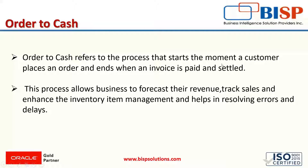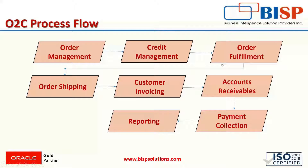There are various steps followed in this process. Here we have the process flow of the O2C cycle, in which the first step is order management. Just like our P2P cycle where the first step is creating a vendor, for order to cash there is required a customer who is placing an order for us. The process gets started by entering a sales order that contains the details of the customer, the order receipts, its quantity, its rate, and other required details.